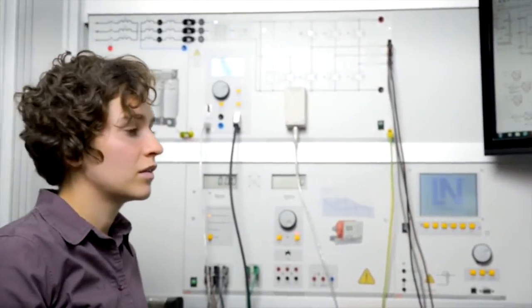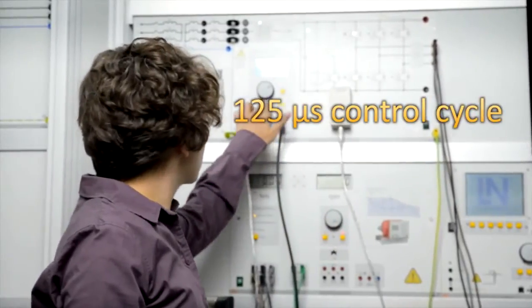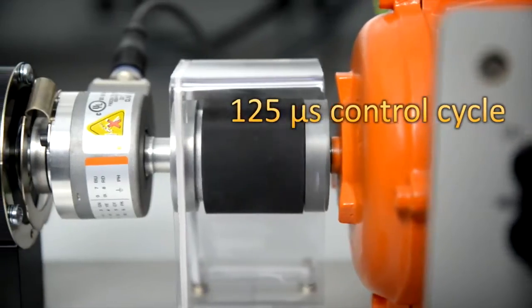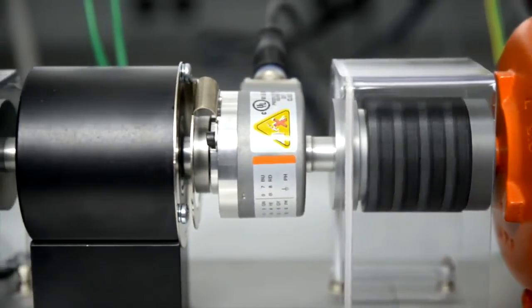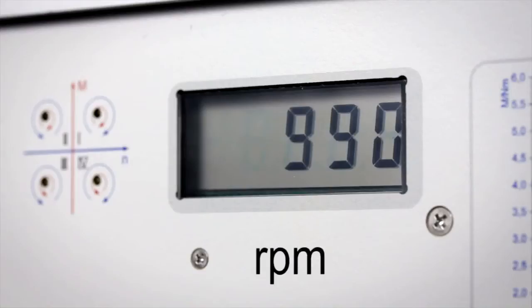The control unit delivers rapid control cycles of 125 microseconds. That's why the system can respond to different measurement values without any delay, even when dealing with complex algorithms.